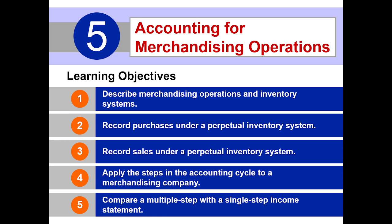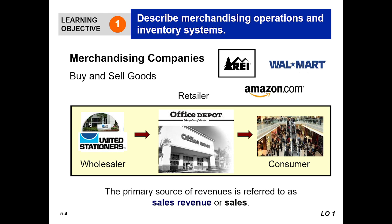We will start with Learning Objective 1: describe merchandising operations and inventory systems. Merchandising companies are related to buying and selling goods. Examples include Walmart, Amazon, and similar retailers. United Stationers is an example of a wholesaler company. These companies engage in merchandising operations — buying from suppliers and selling to consumers.